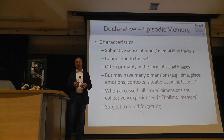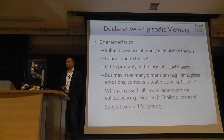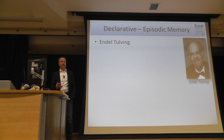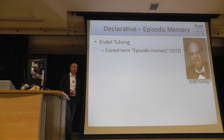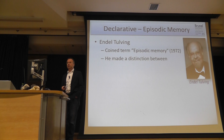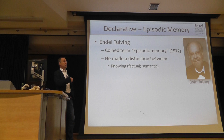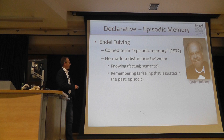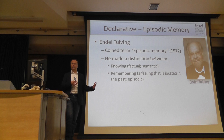Endel Tulving coined the term episodic memory and distinguished between memory for knowing — which in Squire's taxonomy would be semantic/declarative memory — and memory for remembering, which is episodic memory, characterized by a feeling that the event is located in the past.